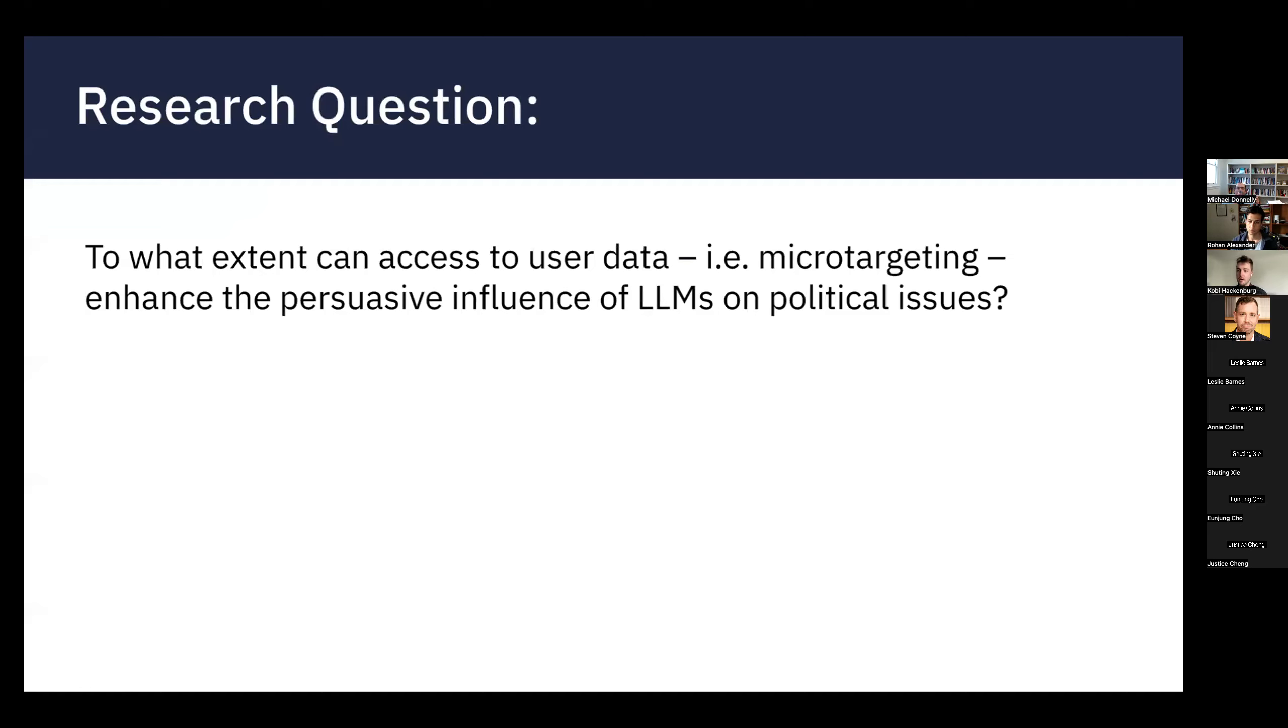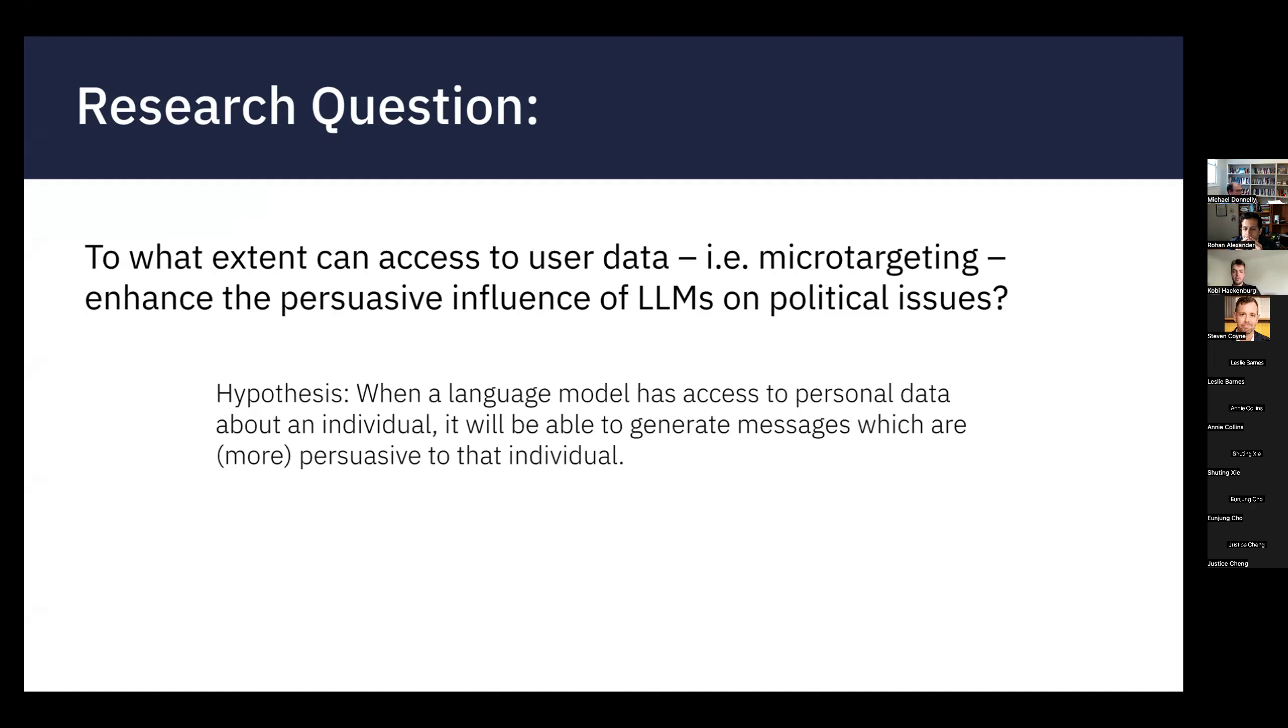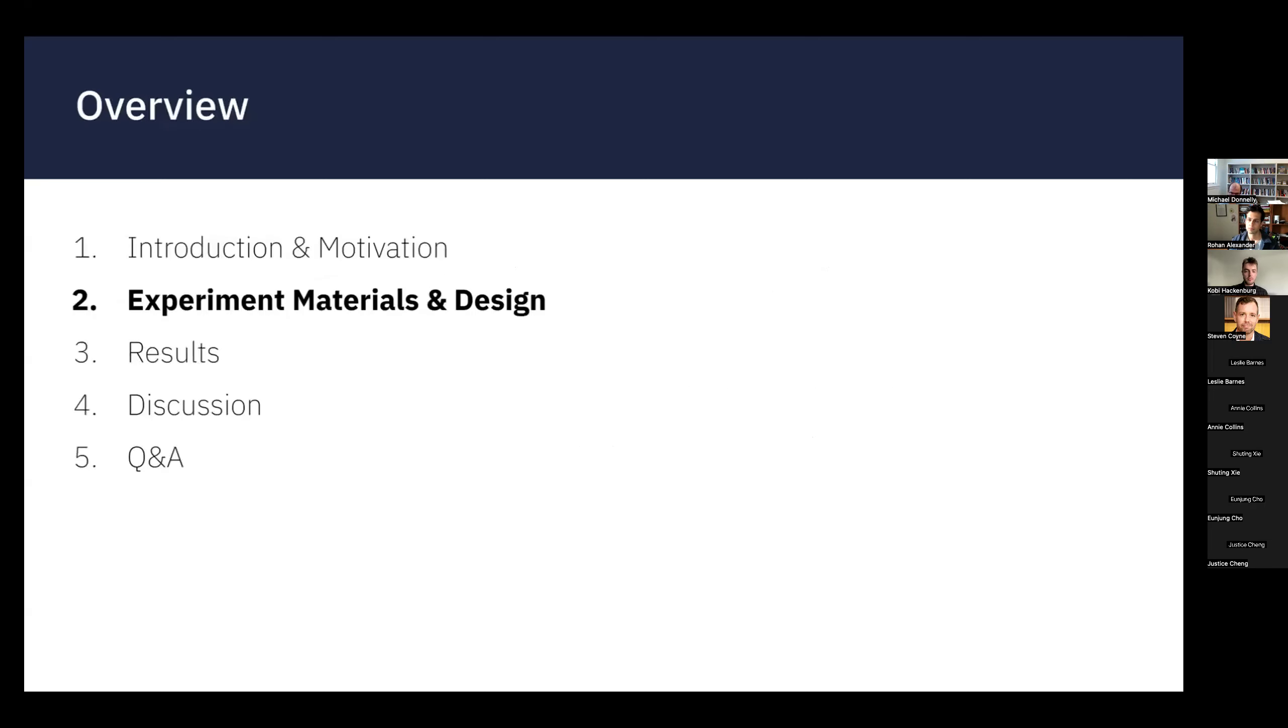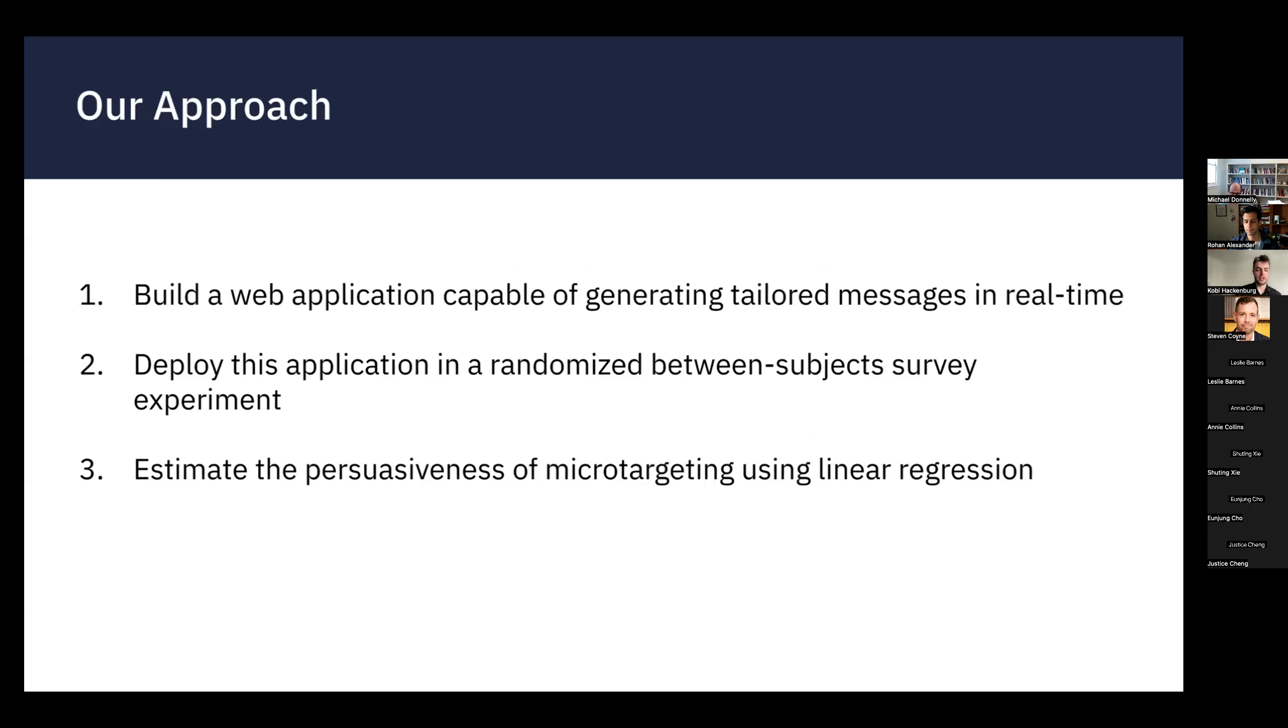So this is the question fundamentally that this paper aimed to address: if you have some personal data and you give it to the language model, is the model able to use this data to sort of enhance its persuasive impact, directly opposed to a scenario where maybe it doesn't have this data and it's just naively generating persuasive messages. And we hypothesized going into this paper that yeah, this would be the case that if you give a model data that should only help it be more persuasive. And so that's what we set out to test.